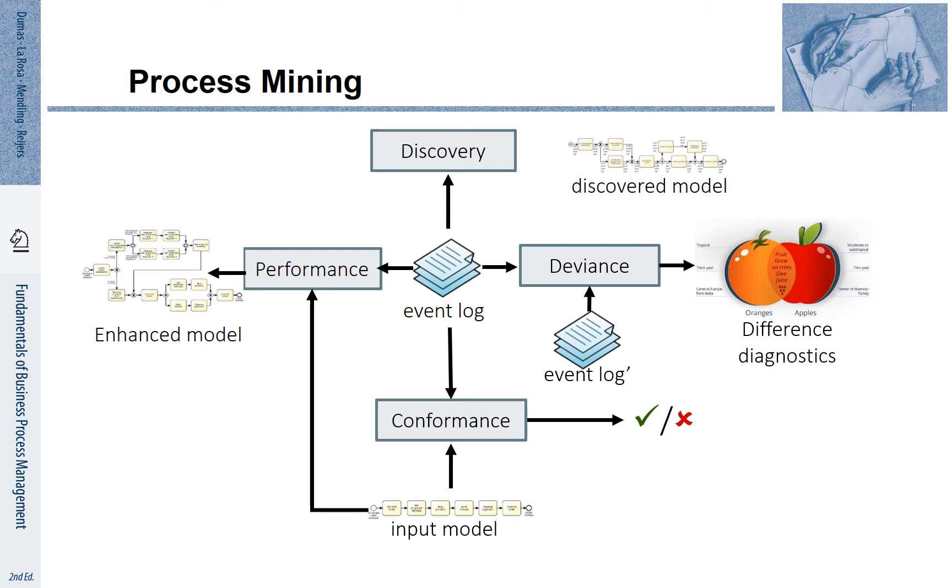For example, we may want to record how often a certain activity has been executed and how often a certain path has been taken. The event log also tells us how long it has been taken to progress from one activity to another. All these techniques belong to the family of process mining.